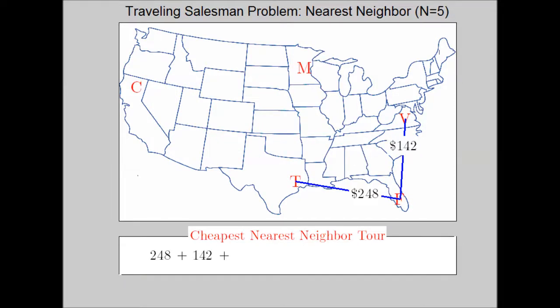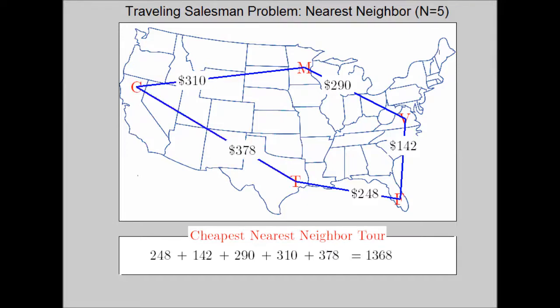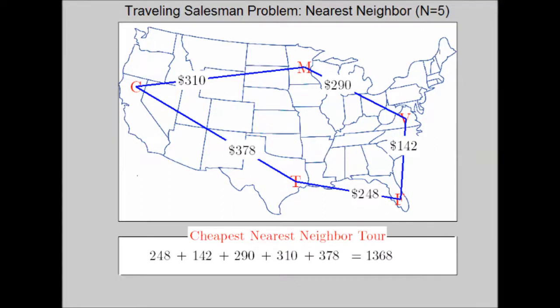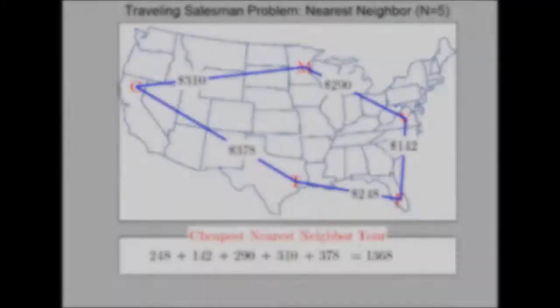This algorithm is repeated the same number of times as there are cities. In this case there are five cities, so we repeat it five times. Of those five, the cheapest one is shown here. This also happens to be the optimal tour, which we also showed in the brute force algorithm.